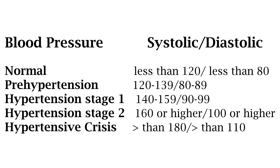If you have a systolic pressure between 120 and 139 or a diastolic of 80 to 89, you may be considered pre-hypertensive. A systolic of 140 to 159 or a diastolic of 90 to 99 classifies as hypertension stage one. A systolic of 160 or higher or a diastolic of 100 or higher is hypertension stage two. If your systolic is over 180 or your diastolic is over 110, this is cause for alarm and you should seek medical attention, as this is considered a hypertensive crisis.